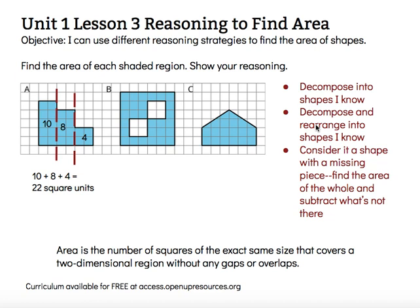I could have counted each one of those blue squares individually, and that would work. But this process of decomposing into rectangles and finding the area of each, then combining them, is a more efficient method.